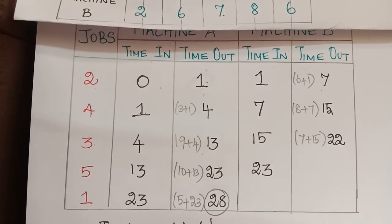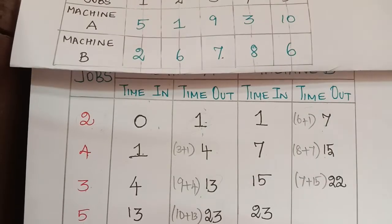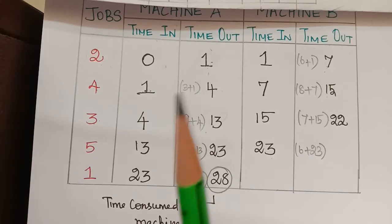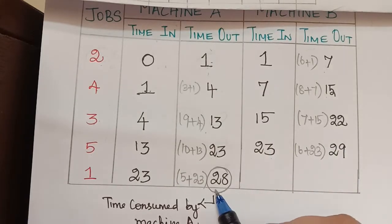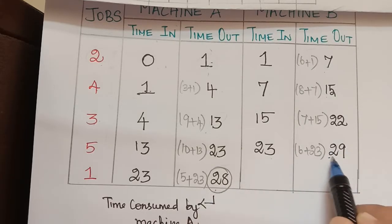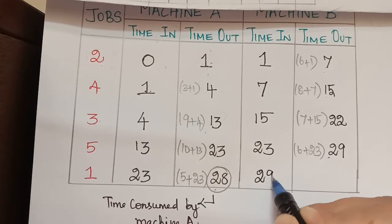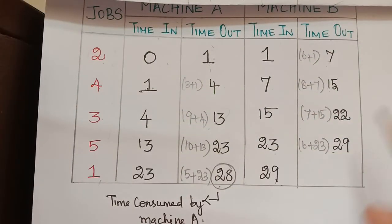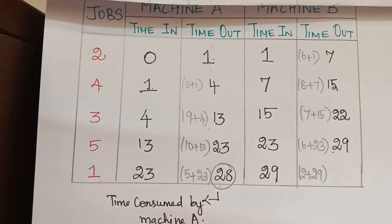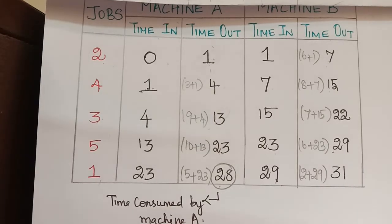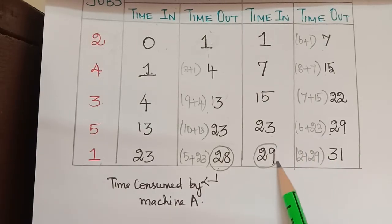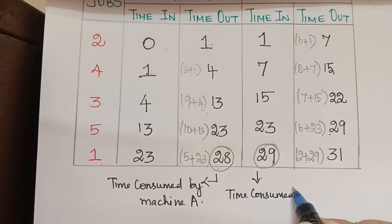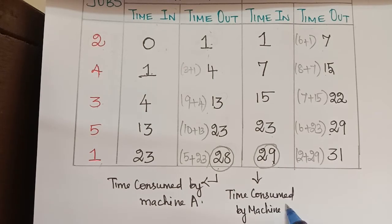Job 5 performs for 6 hours in machine B, so 6 plus 23 equals 29. We check whether 28 (machine A time out for job 1) or 29 is highest — 29 is highest, so time in for job 1 in machine B is 29. Job 1 takes 2 hours in machine B, so 2 plus 29 equals 31. This 29 is the time consumed by machine B.